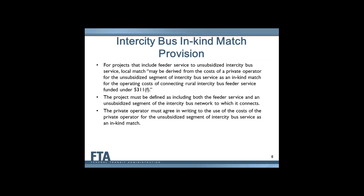The net cost of the extension after farebox recovery would be paid by the grant. The project includes a longer portion of the line, including the part that was already there — that part is paid for by the intercity carrier and is unsubsidized. So the net cost of that part after farebox recovery becomes the match for the extension. The intercity carrier must have agreed to the use of the cost of the unsubsidized segment as the match and must have bought into the entire project definition.